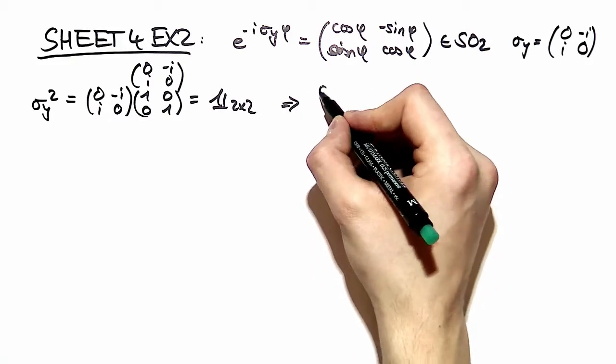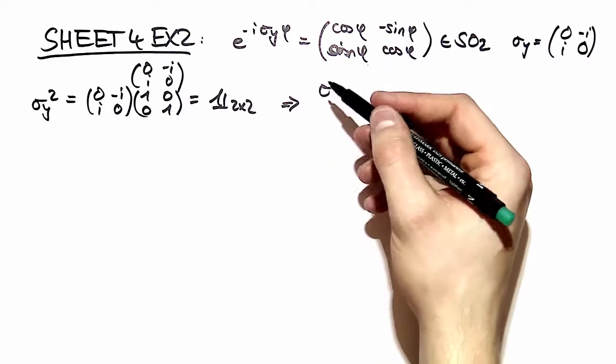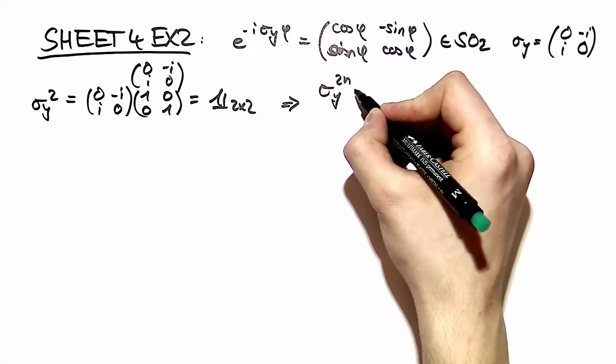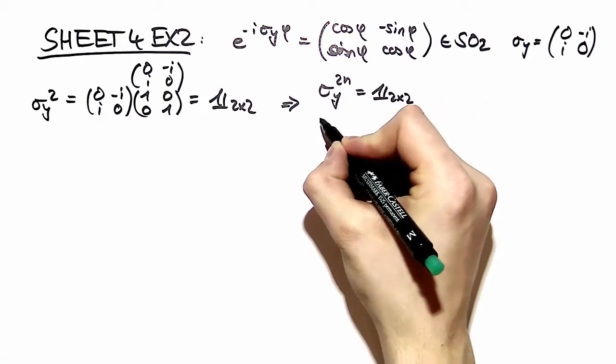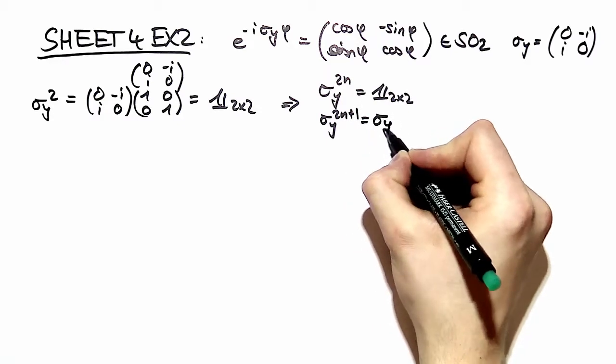This makes it possible to do the power calculation for every sigma y. We have for an even power of sigma y it always yields the identity matrix and for an odd power of sigma y we always get back sigma y.